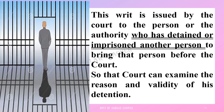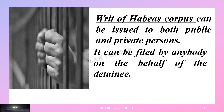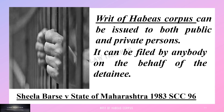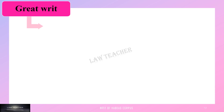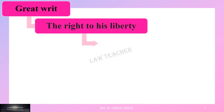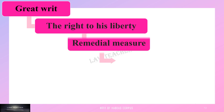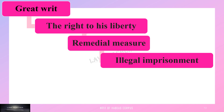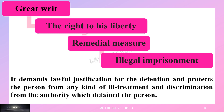The writ of habeas corpus can be issued to both public and private persons, and it can be filed by anybody on behalf of the detainee. The writ of habeas corpus is the most important writ available to a person as it assists him to determine the right to his liberty. It acts as a remedial measure which ensures to set free the detained person from illegal imprisonment. It demands lawful justification for the detention and protects the person from any kind of ill-treatment and discrimination from the detaining authority.